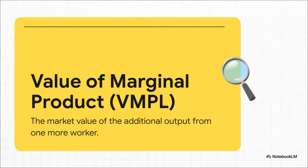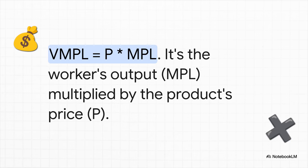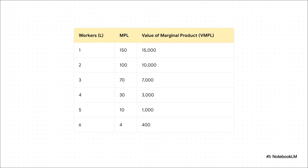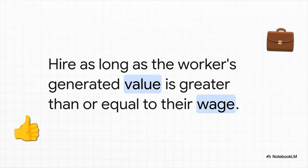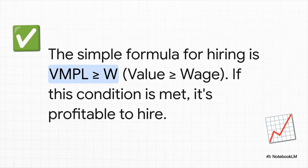Now let's put a price tag on that output — this is where the magic really happens. We're going to calculate the value of the marginal product, or VMPL. The formula is actually pretty simple: you just take the price of the product, P, and multiply it by the worker's marginal product, the MPL. For our publisher, let's say each book sells for $100. This table illustrates so clearly the value each worker generates: the first worker brings in $15,000 in value, the second brings in $10,000, and so on. This brings us to our first golden rule: you should keep hiring as long as the value they create is more than or equal to the wage. VMPL ≥ W — that's our first rule for maximizing profit.